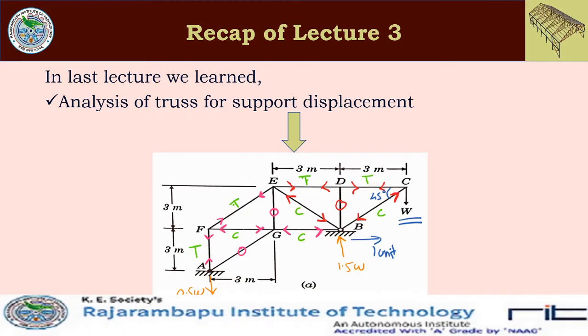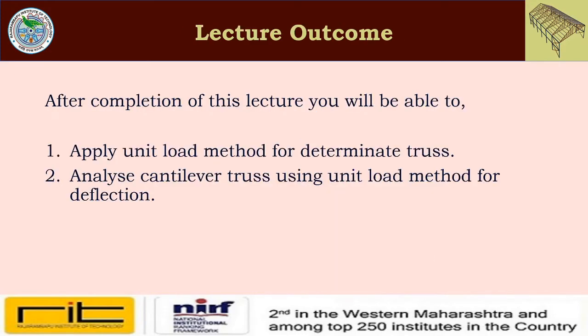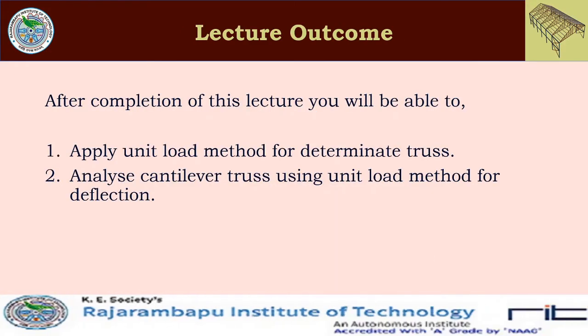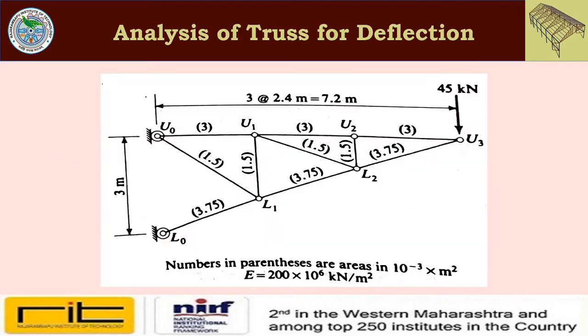We applied a unit load at support B towards the right, and the resulting deflection was −3.15 mm, indicating deflection opposite to the applied load. Today's lecture outcomes are: (1) apply the unit load method, and (2) analyze a cantilever truss using the unit load method for deflection.